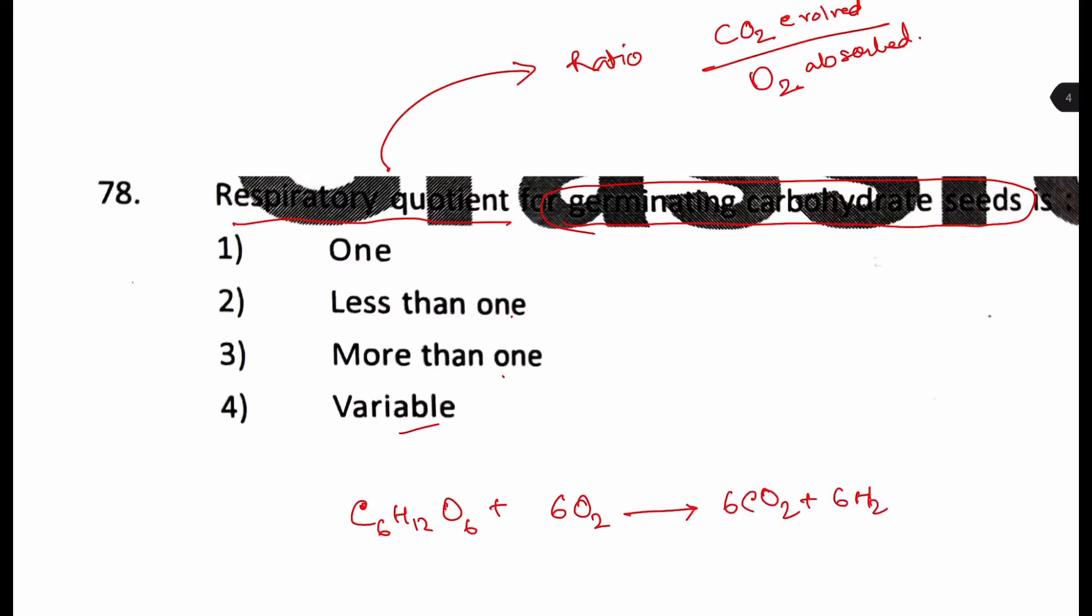So that is when here we can write the RQ, which is equal to CO2 by O2. Clearly we can see 6 CO2 is evolved. So we will write 6 and then 6 O2 is evolved. Then below also we will write 6. And when it gets cut, so it comes to unity. Right. So clearly our answer is 1 there. Next question.